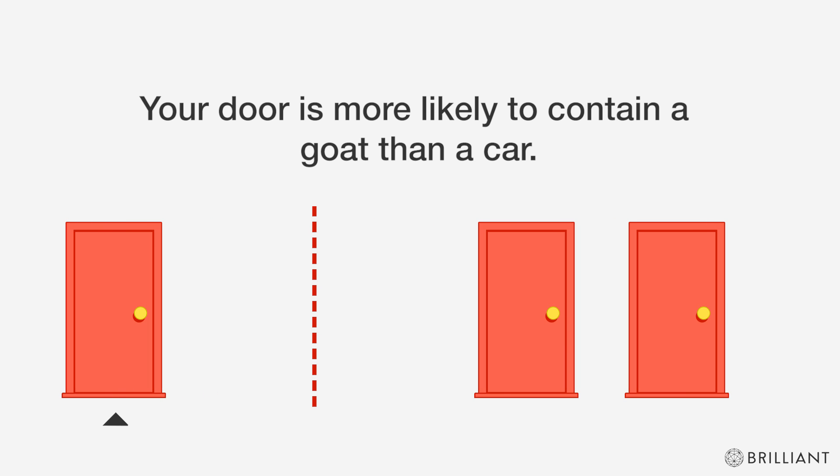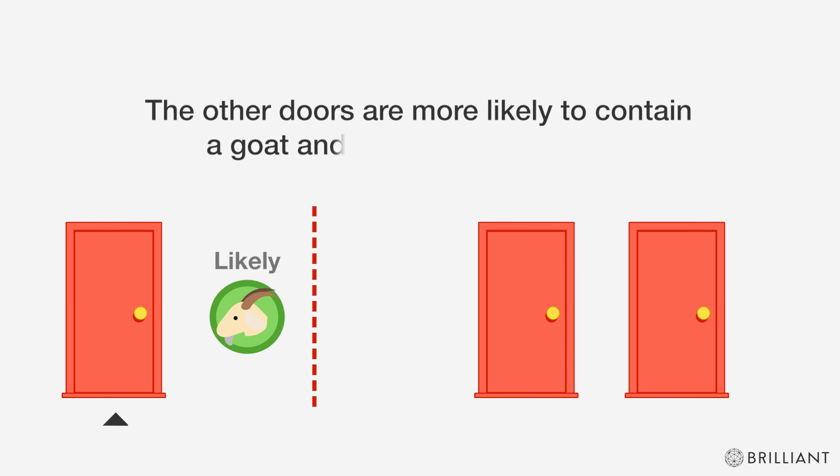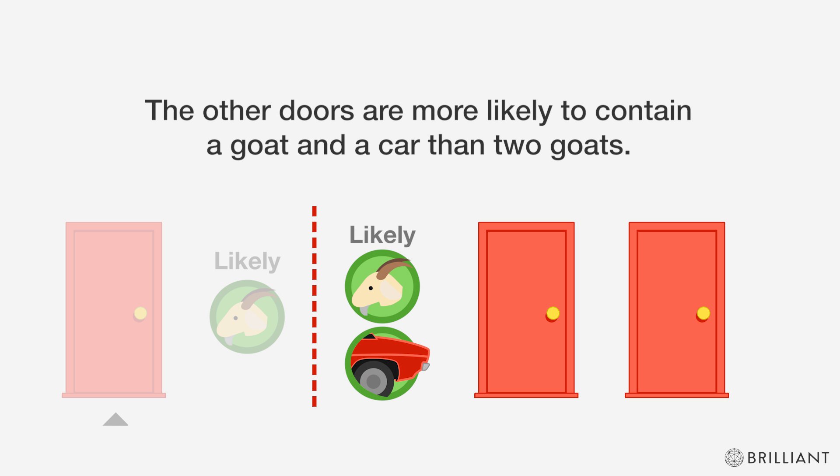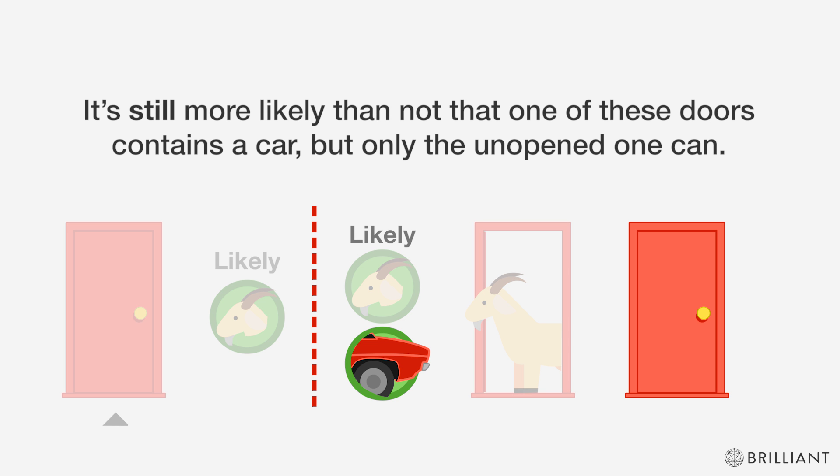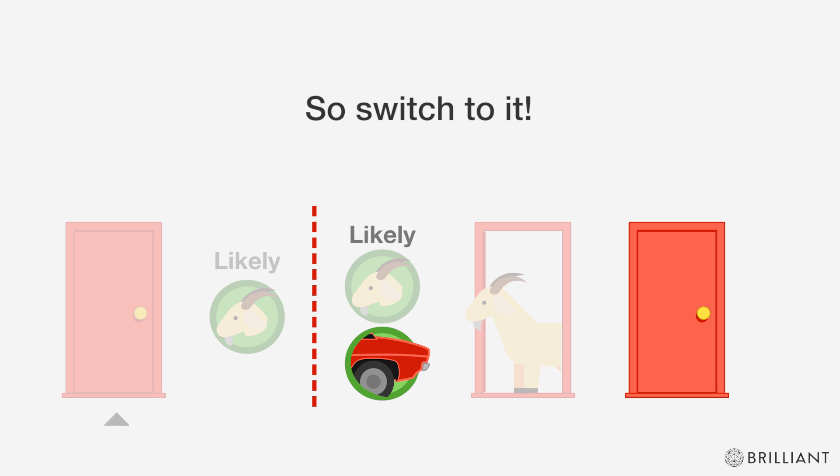Your door is more likely to contain a goat than a car. The other doors are more likely to contain a goat and a car than two goats. So even after Monty opens the door with the goat, it's still more likely than not that one of these doors contains a car. But only the unopened one can, so switch to it.